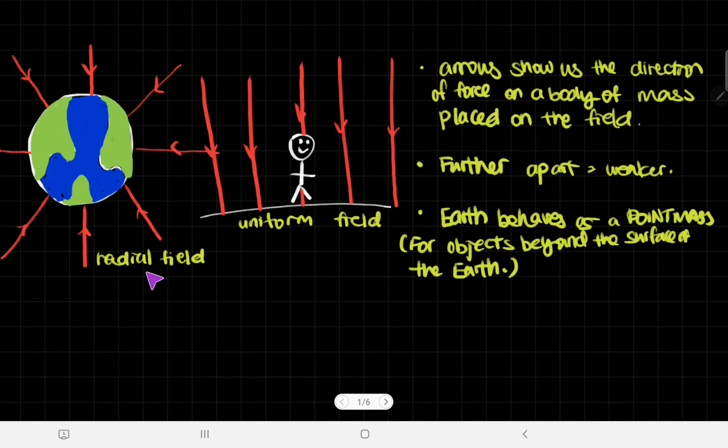This is a radial field for Earth. This is a uniform field, something that we will experience every single day. We just represent them and it has all the same rules that we've seen before in an electric field.